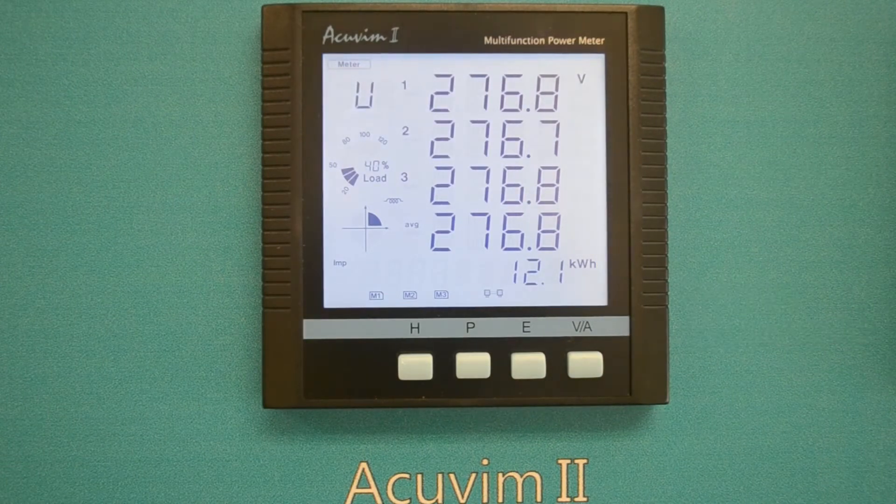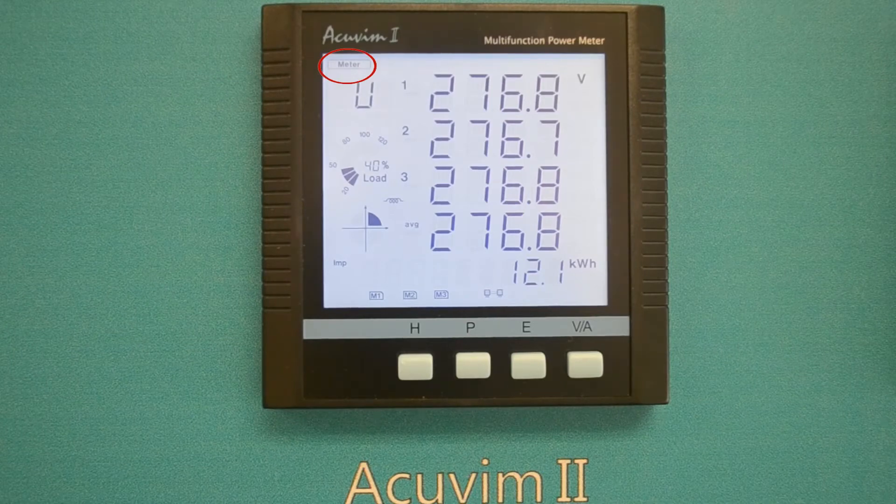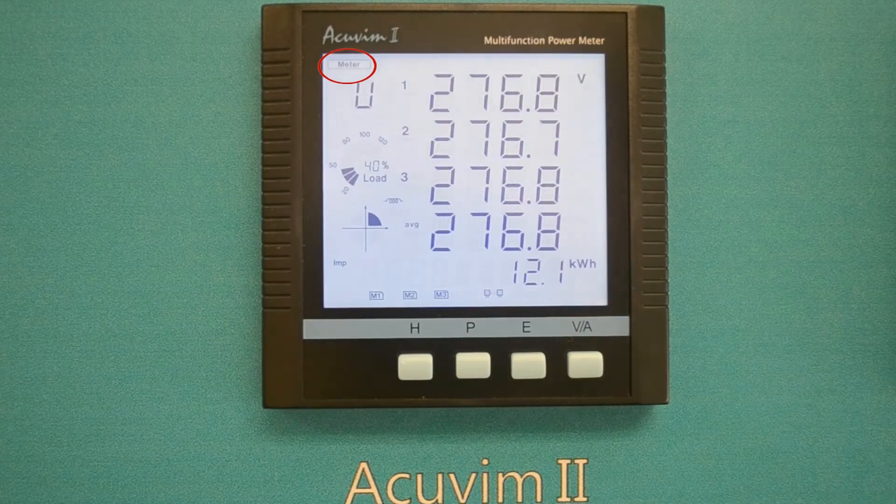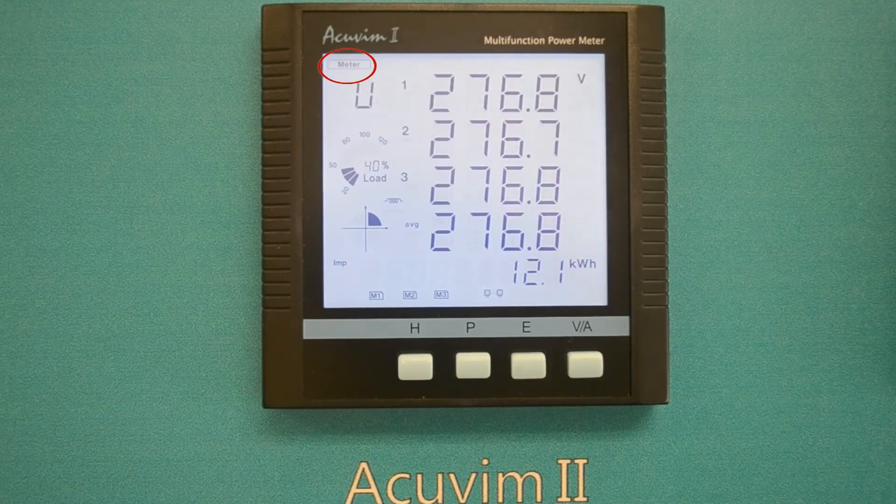When the meter is powered up, you will see the meter icon in the mode display section. This indicates the meter is now reading in meter data mode.